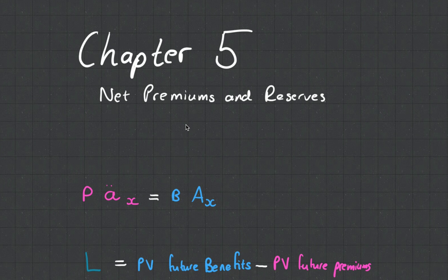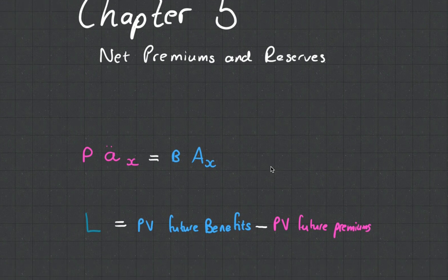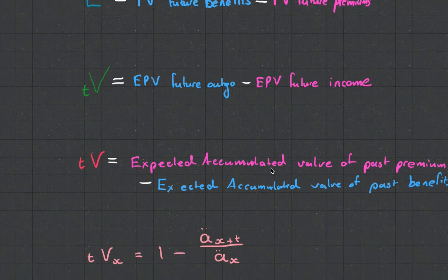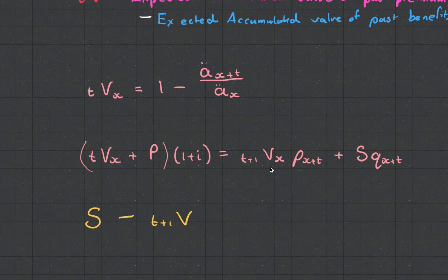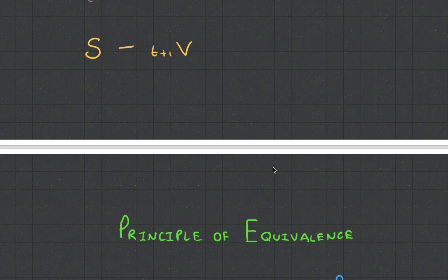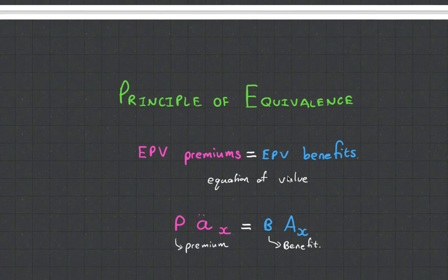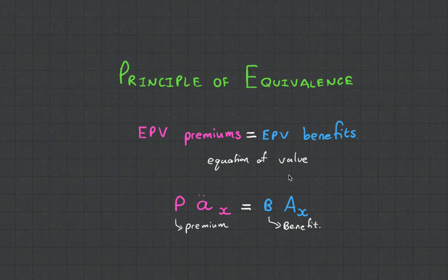Net Premiums and Reserves - just a quick intro. These are some of the formulas we're going to be looking at in this video. Let's start with one of the most important concepts in actuarial science: the Principle of Equivalence. This is our basic equation of value, saying that the expected present value of premiums equals the expected present value of benefits. This is important because if we know the premium we can calculate the benefit, and if we know the benefit we can calculate the premium.